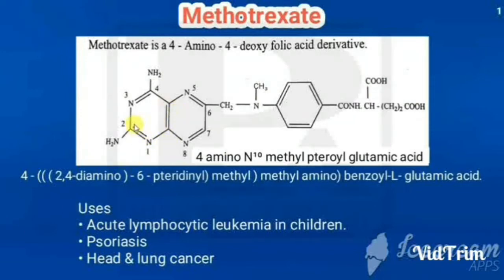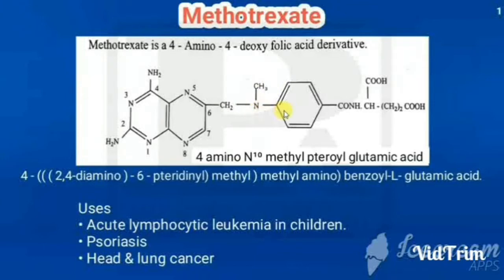The pteridine ring has amino groups at positions 2 and 4 — that is why it is called 2,4-diamino. The sixth position of pteridine is connected with the methyl group, so it is called pteridine-6-yl, then methylamino. The remaining part is benzoyl-L-glutamic acid. That gives us the full chemical name for methotrexate.